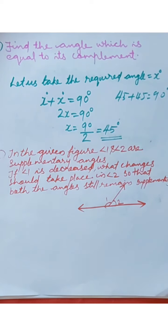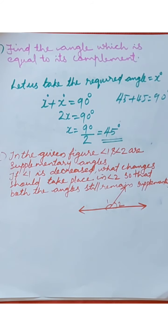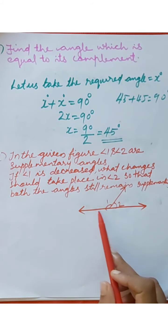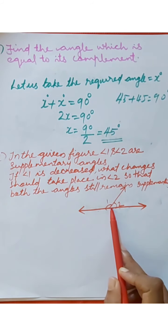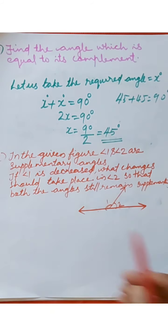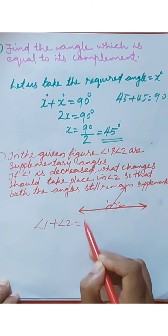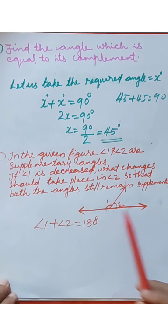Next question: in the given figure, angle 1 and angle 2 are supplementary angles. If angle 1 is decreased, what changes should take place in angle 2 so that both angles still remain supplementary? Here is the given figure — here is angle 1, here is angle 2. Given that angle 1 plus angle 2 equals 180 degrees, because angle 1 and angle 2 are supplementary angles.